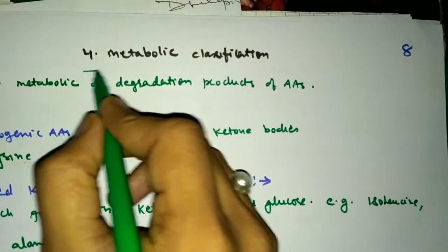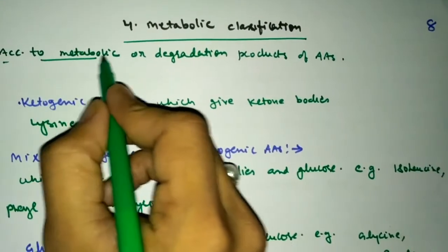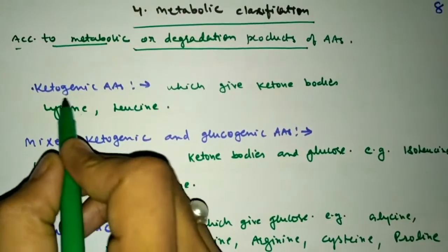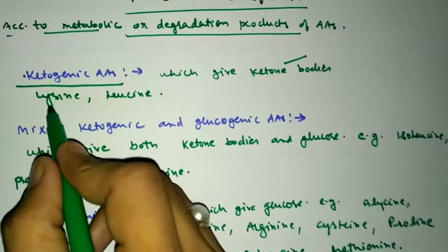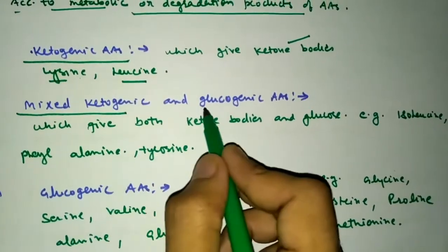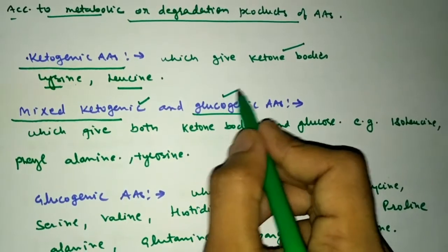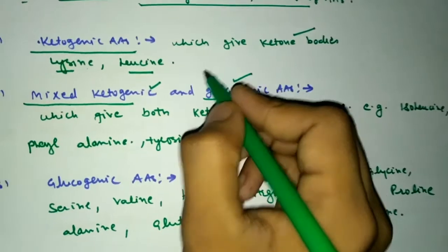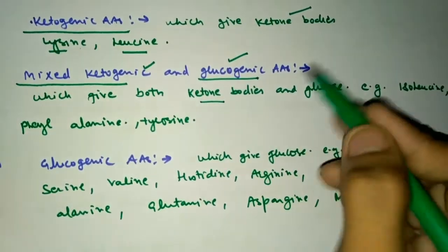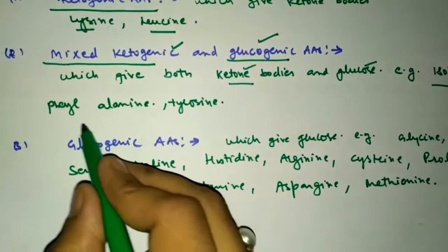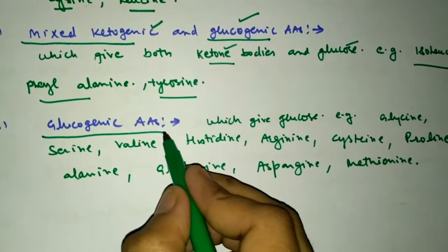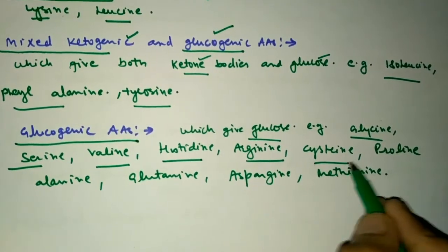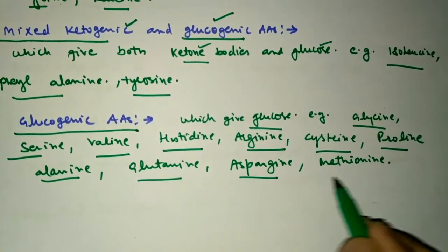Finally we have the metabolic classification, based on the metabolic degradation products of amino acids. First are the ketogenic amino acids, which produce ketone bodies — these are lysine and leucine. Second are the mixed ketogenic and glucogenic amino acids, which can produce both ketone bodies and glucose. The ketone bodies are acetoacetate and beta-hydroxybutyrate. These are isoleucine, phenylalanine, and tyrosine. Third are the glucogenic amino acids, which produce glucose: glycine, serine, valine, histidine, arginine, cysteine, proline, alanine, glutamine, asparagine, and methionine.